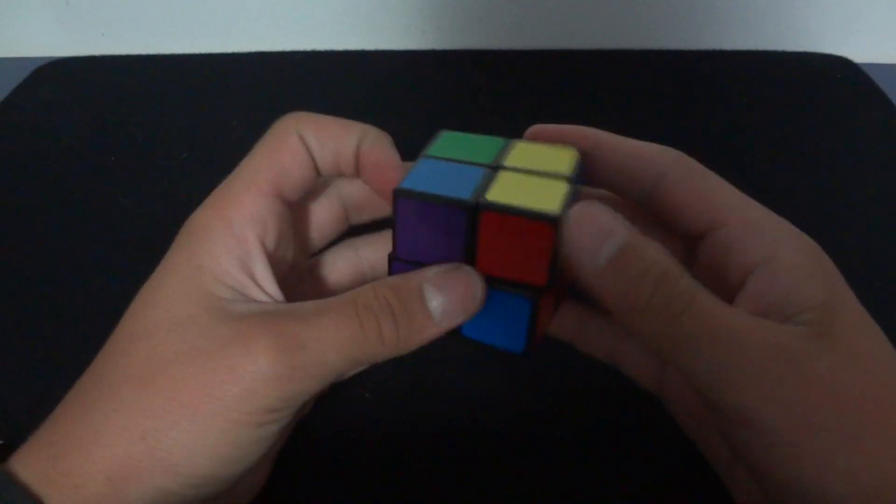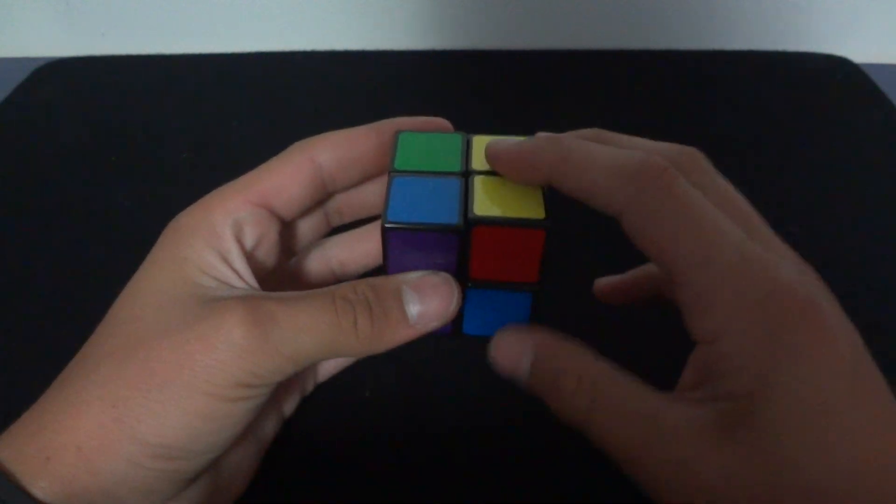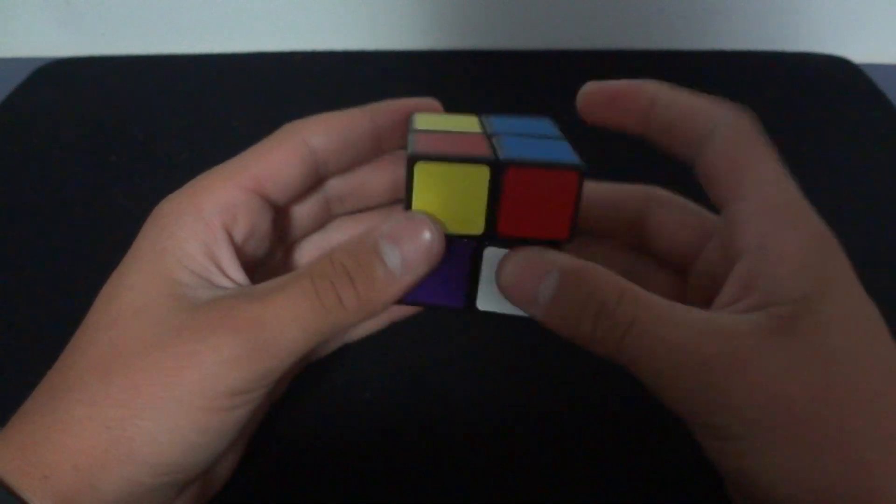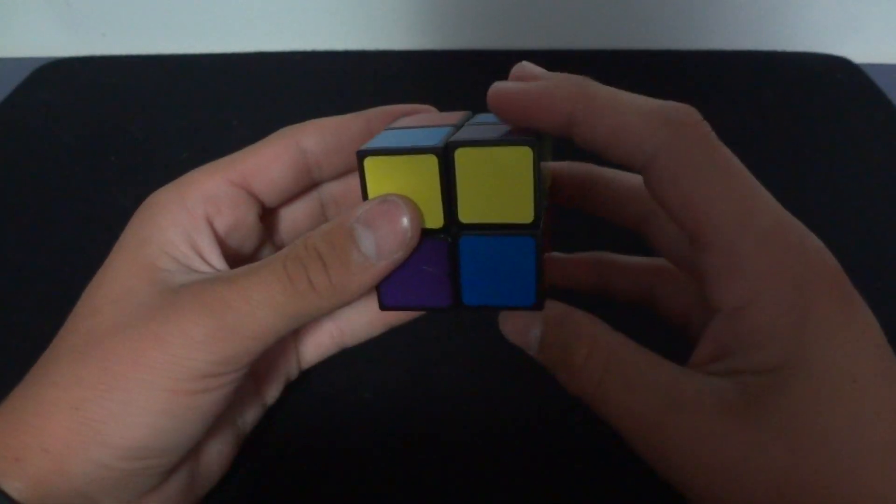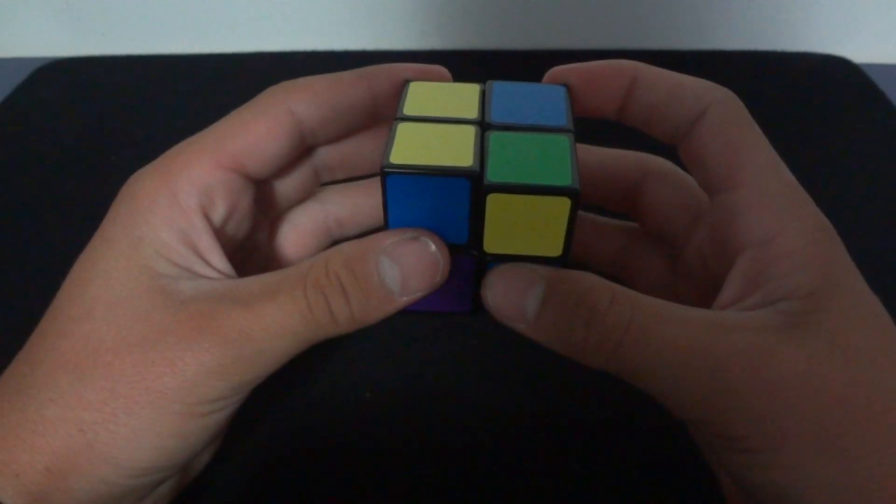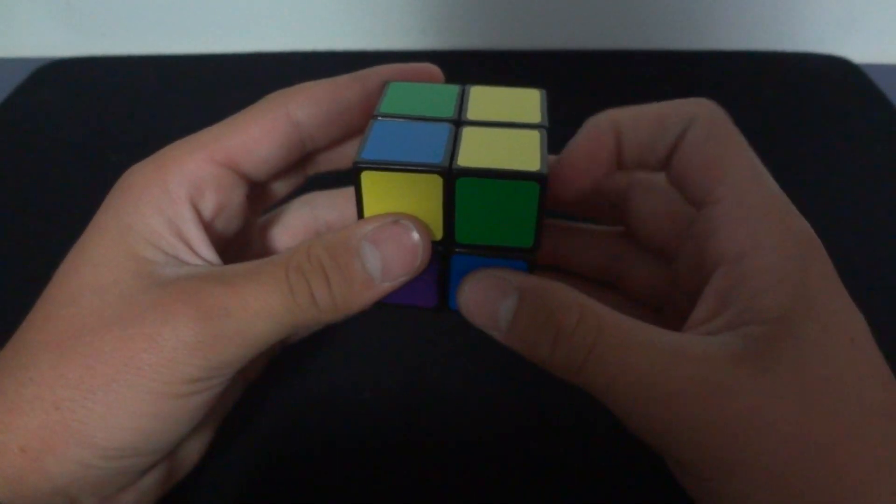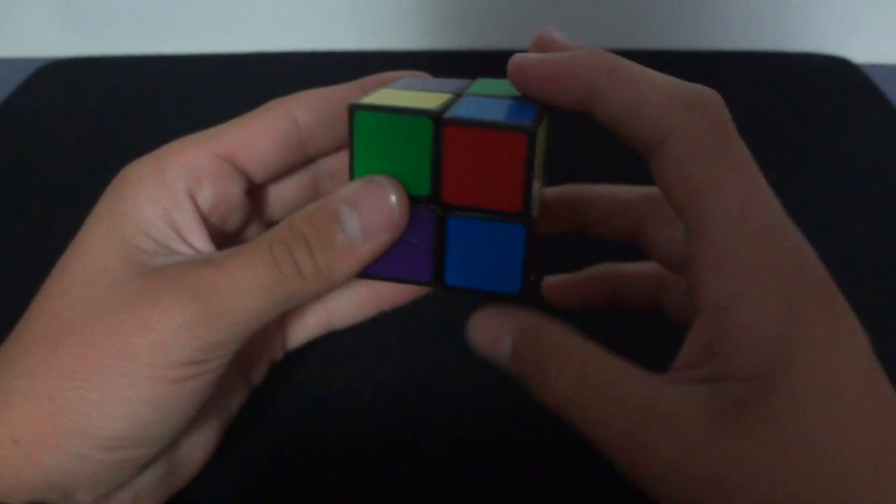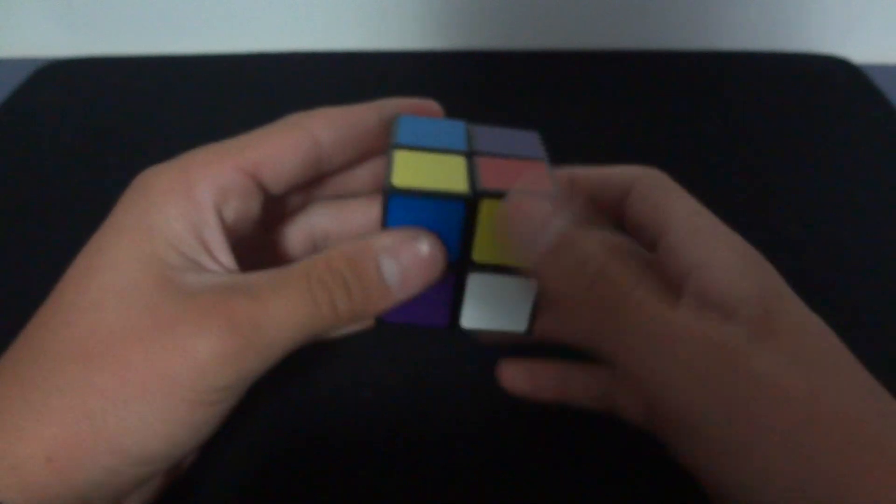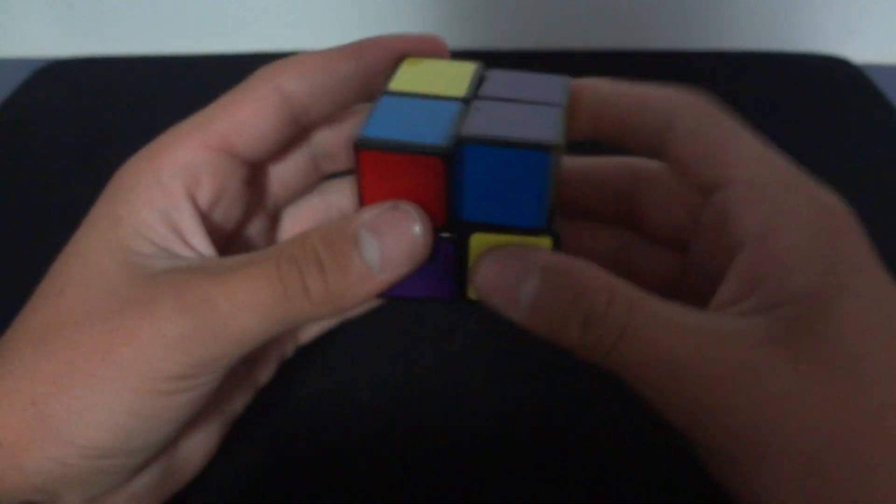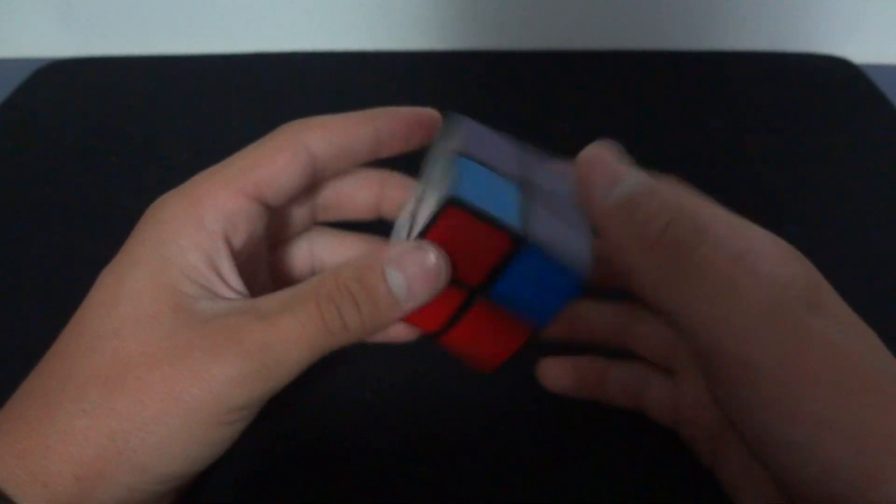Then you can move on to the yellow. You have two, so you put it on the right, do the algorithm. Forward, twist, back, twist, forward, twist twice, back. Repeat the algorithm multiple times, positioning yellows correctly until all yellows are complete. Put them on the right or bottom left depending on how many you have, and execute the algorithm until you achieve the full yellow face.